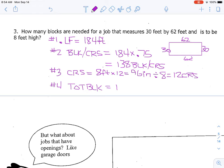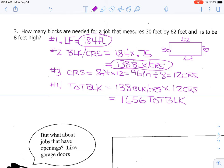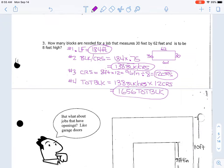So in our fourth step we're finding the total block. And that means that we take how many blocks we need in a course, blocks per course, and we multiply it by the number of courses, the number of rows that we need. So it is estimated that we will need 1,656 total blocks for that job. So we found four things along the way. We found linear feet. We found blocks in a course. We found the number of courses. And then we found the total block.